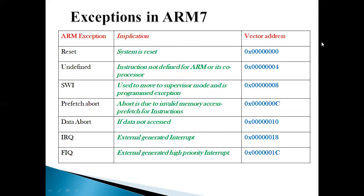In ARM7, we have seven different exceptions which have been defined and all of them are vector interrupts — that is, all of them have a fixed address in memory at which their subroutine address is given once that exception occurs. The address where all exceptions have their addresses is called the vector table. The first is reset, which is a system reset, and since it is asynchronous it refers to a hard reset requiring re-initialization of the processor. Its vector address is the first address in ARM7 memory, that is 0x000.